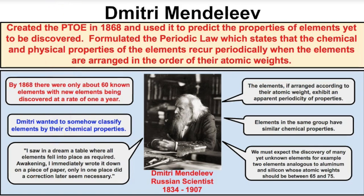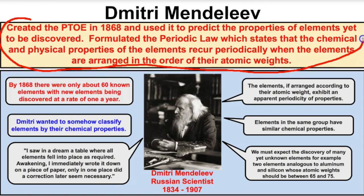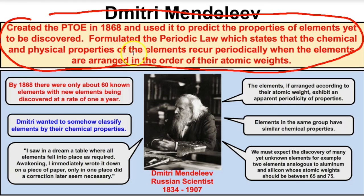Dmitry Mendeleev was a Russian-born scientist that lived in the 1800s and 1900s. He was the first person to create a periodic table of elements in 1868, and he is credited with developing the very first periodic table of elements. He also used his periodic table to predict the properties of elements that had yet to be discovered, leaving blank spaces based on his research.